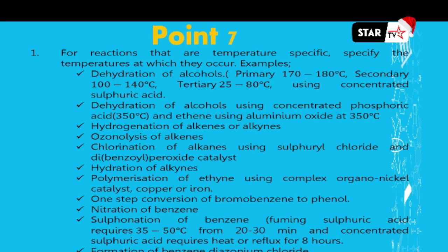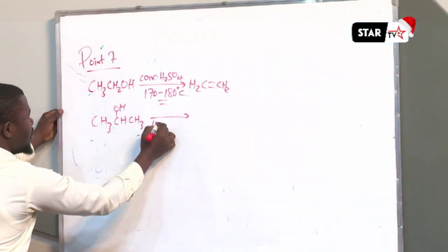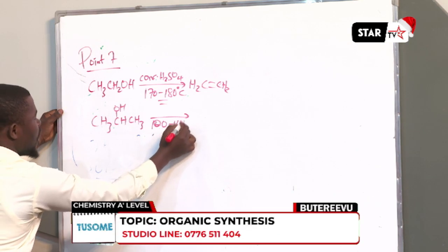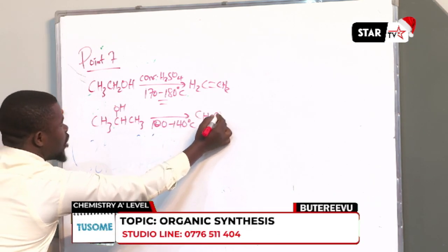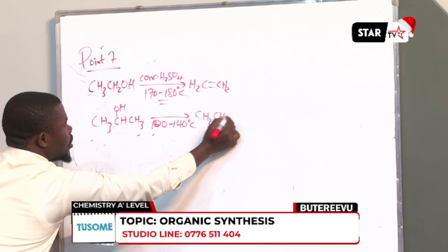When we are dehydrating secondary alcohols, the temperature is usually between 100 to 140 degrees Celsius. For example, you have propan-2-ol and you're dehydrating it. Use the same reagent, concentrated sulfuric acid, but the temperature is between 100 to 140 degrees Celsius. This will give you propene.